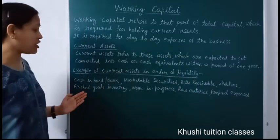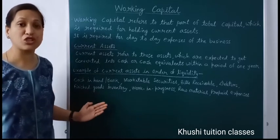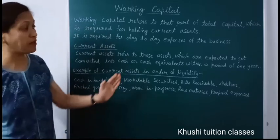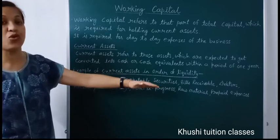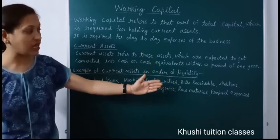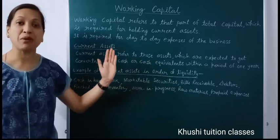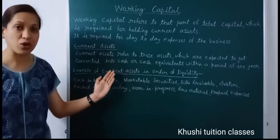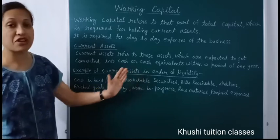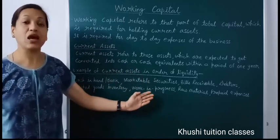Then comes finished goods inventory, meaning stock of finished goods. When it is sold in the market, debtors are created, and those debtors may sign a bill of exchange giving bills receivable, and then payment is received converting it into cash. So finished goods inventory comes after debtors.